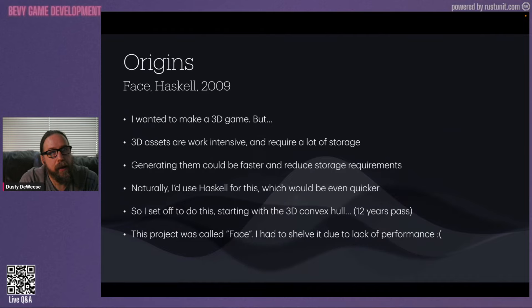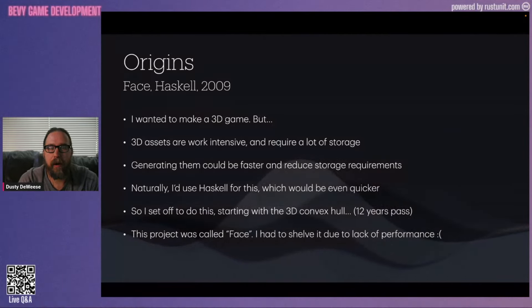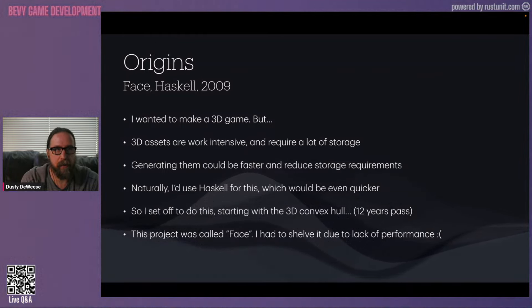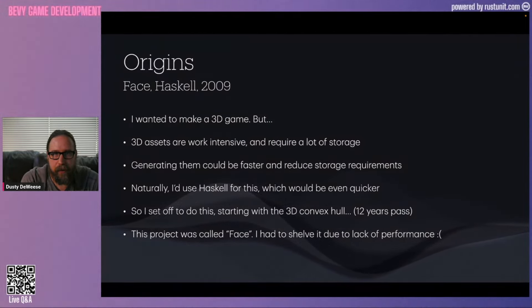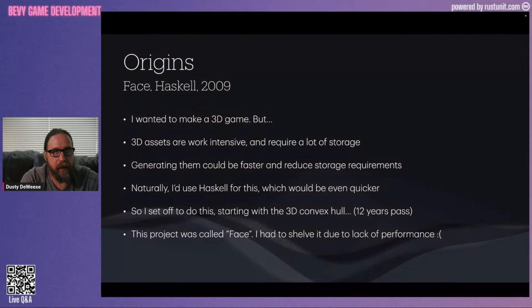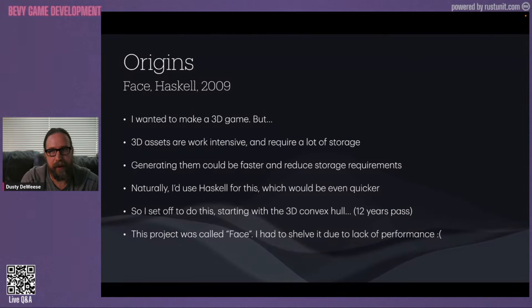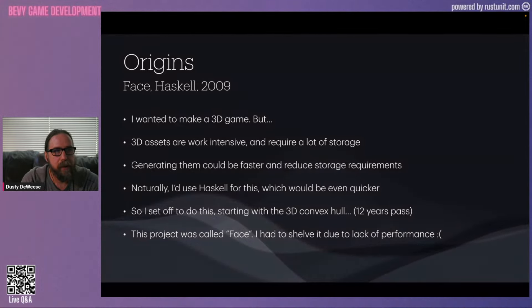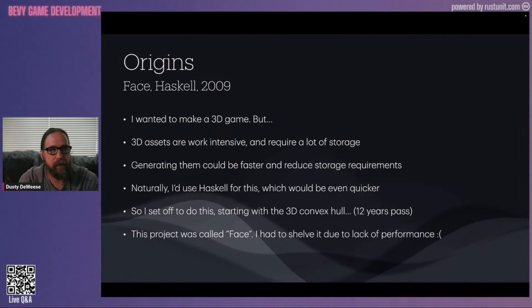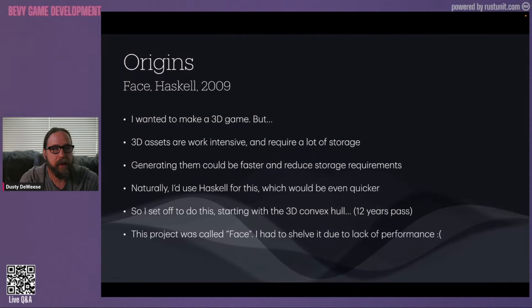To go back — when I first started thinking about what I wanted to make, I started back in 2009 using Haskell, long before Rust was even a thing. I love Haskell and I wanted to make a 3D game, but creating 3D assets — just the meshes — is so much work. As a programmer, when I hit that kind of problem, I make the computer do it for me. Naturally, I'd use Haskell, my favorite programming language.